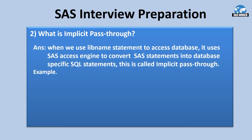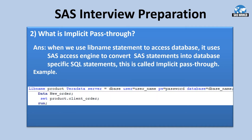When we use the libname statement to access a database, it uses the SAS access engine to convert SAS statements into database-specific SQL statements. This is called implicit pass-through. So we can achieve implicit pass-through using the libname statement. Here we are connecting to Teradata: we specify libname, then the library reference, then the engine type which is Teradata, then connection details such as server name, username, password, and database name — provided by your DBA. Next, we read a table using data new_order set product.client_order, where product is the Teradata library. The SAS access engine for Teradata converts these statements into Teradata-specific SQL statements and they get executed. This is called implicit pass-through.